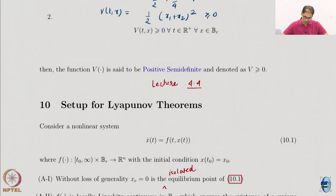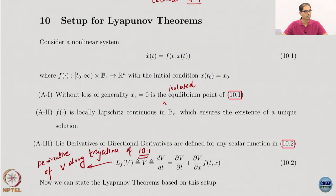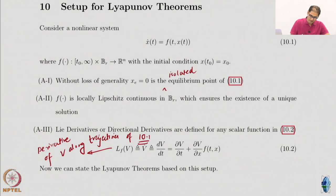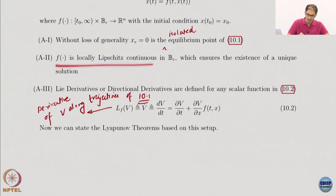We also started discussing the Lyapunov theorems themselves. I had mentioned that we will look at the theorems first, understand them, maybe try to apply them, and then look at the proofs of at least one version — once you see a proof of one version, everything else follows. We started with the structure of the dynamics and assumed that zero is the equilibrium point and f is locally Lipschitz, so existence of unique solutions is not a problem.